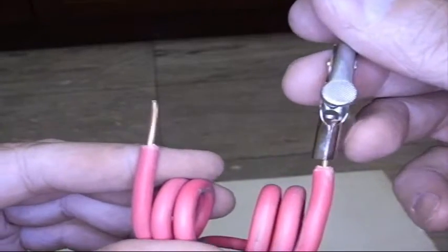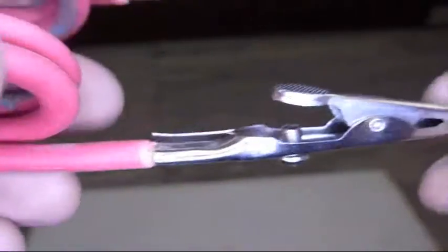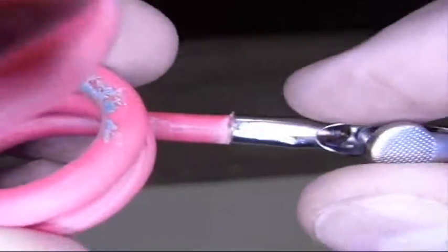I've bared off enough wire that it will go inside there and I can solder it. To crimp this end on here, first I smashed over one side. Then I'm going to go back and smash over the other side.